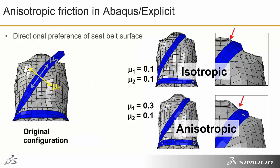Another contact enhancement is anisotropic friction — we can have different friction in two different directions. An obvious application of that would be in crash modeling of seat belts, and you can see in this example that the anisotropic and isotropic friction results have given the solution a different look.